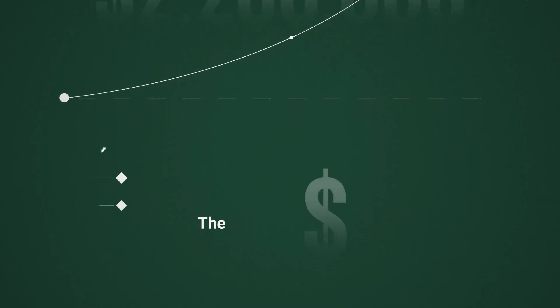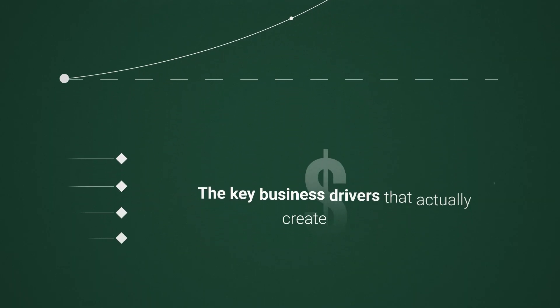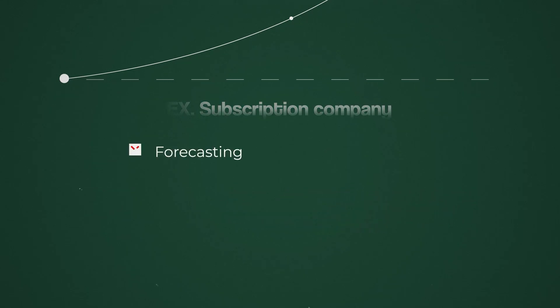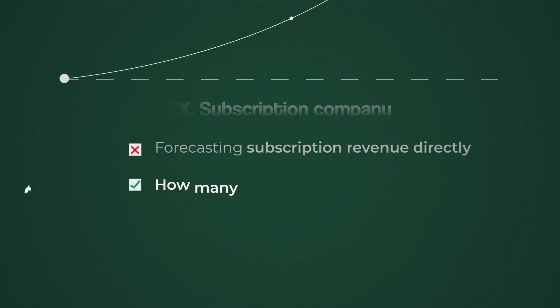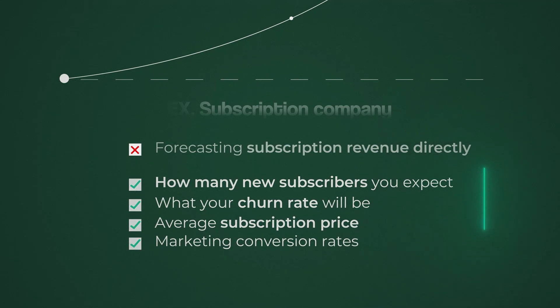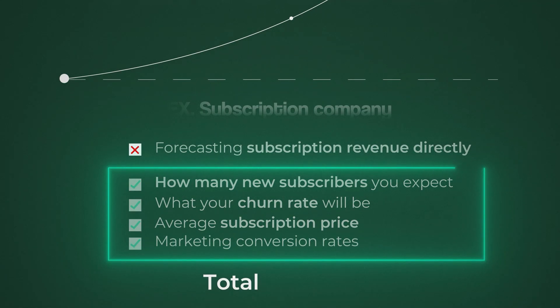You identify the key business drivers that actually create that revenue. So for example, if you're a subscription company, instead of forecasting subscription revenue directly, you'd forecast things like how many new subscribers you expect, what your churn rate will be, your average subscription price, and your marketing conversion rates. Then those drivers naturally build up to your total revenue.